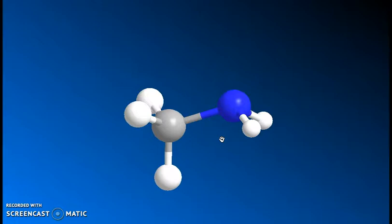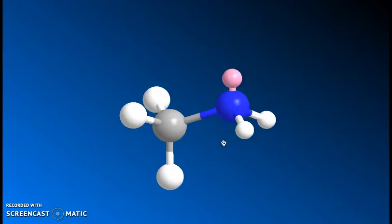And often we forget those lone pairs. We can visualize them in this case if we want to. In this example, the lone pairs are represented by the pink sphere and they occupy the fourth place in our hybridization around the nitrogen.